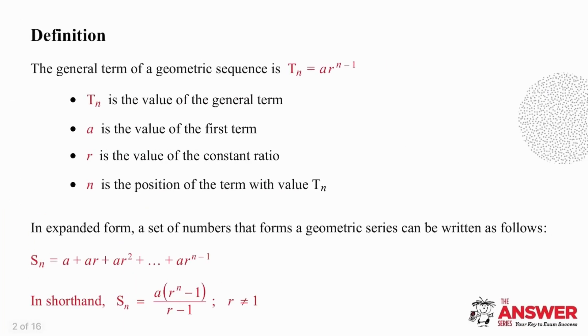We're going to start by looking at the theory. The most important reminder here is that Tn represents the value of the general term, whereas n represents the position of the term. Make sure you don't muddle those two when you're working with a question.